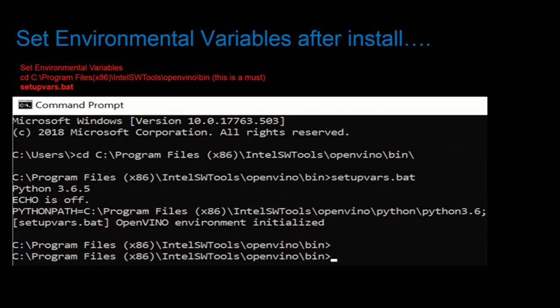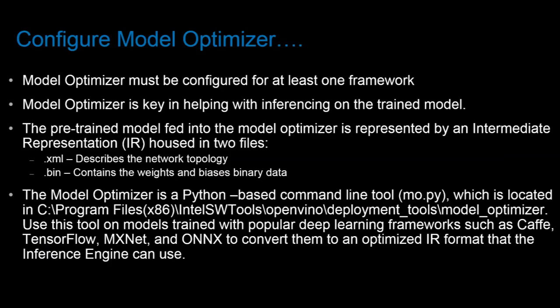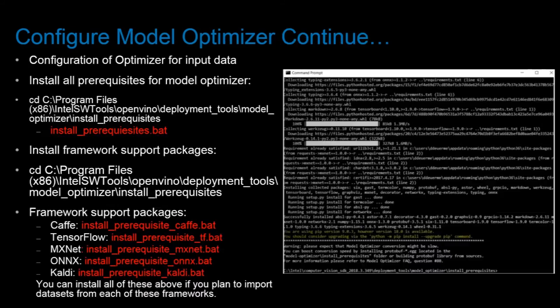Now we need to configure the model optimizer, which is key in helping us ingest our pre-trained model for inferencing in a target environment. This is accomplished by passing in an intermediate representation made up of two files: a .xml file and a .bin file holding the network topology, weights, and biases respectively. To begin configuring the model optimizer, run the install_prerequisites.bat file, which will install all relative prerequisites. We also need to install at least one framework support package.